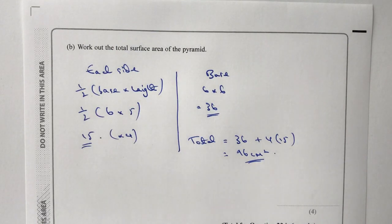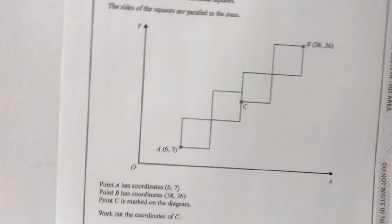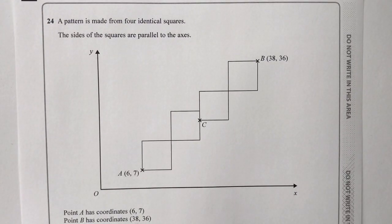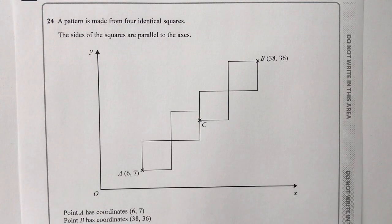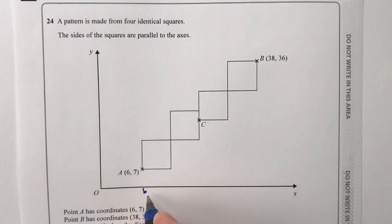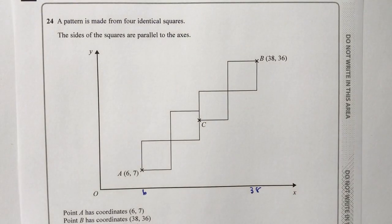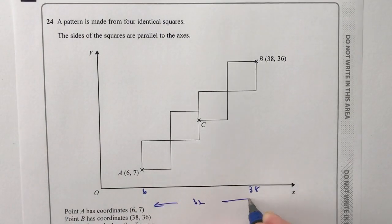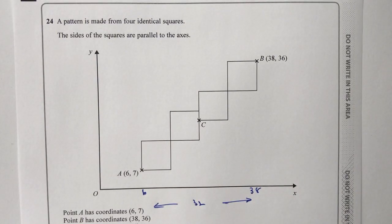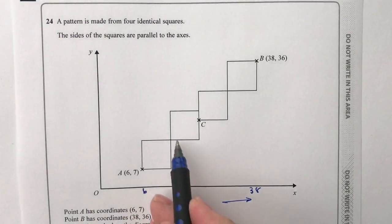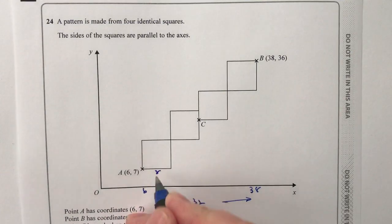Let's move on to question number 24, which is a little bit trickier. You need to think about where we are on a grid. This point is at 6 on the x-axis, and this other point is at 38 on the x-axis. The difference between the two is 32 — 38 take away 6 is 32 — which means each of the four equal lengths along there must be 8.